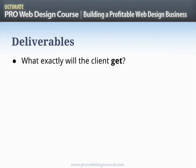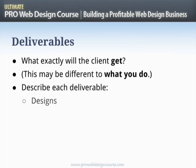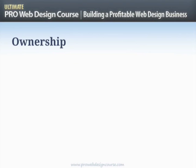Deliverables means what you're actually going to hand over — what assets will the client actually get. This may be different to what you do, and I'd suggest divorcing these in your mind and on paper. It really doesn't matter what you do; the deliverables are much more important. For example, saying the client will get this or that gives you the ability to draft in help or subcontract part of the work. What we're really about is delivering results and business value, not just time. Describe every deliverable.